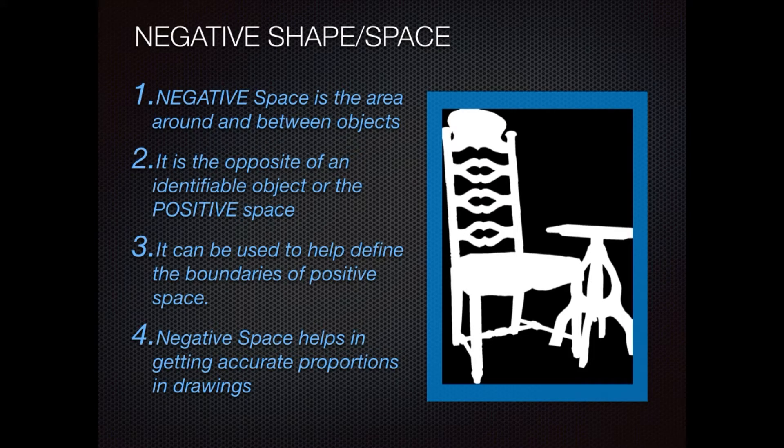Negative space is the area around and between objects. In the picture of the chair and table next to these words, the negative space is the black. The positive space is the stuff — it's the white.